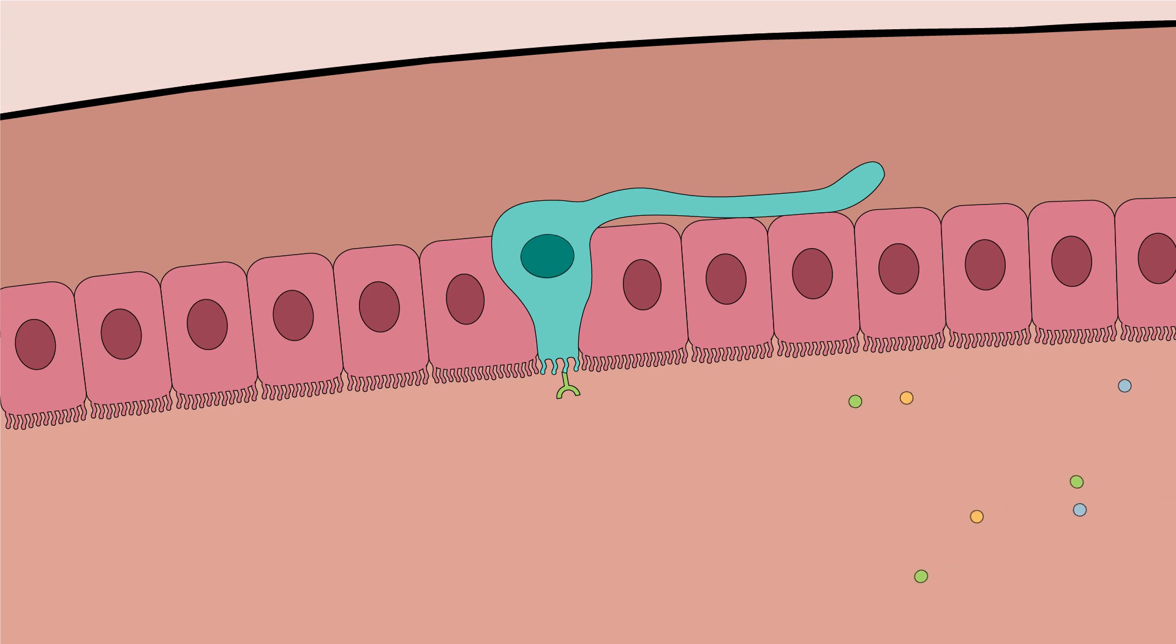Some enteroendocrine cells have receptors that sense bitter tastes. It's thought that these receptors are a line of defense against eating potentially toxic plants which normally taste bitter.